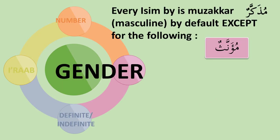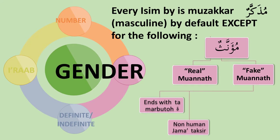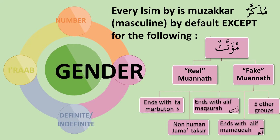The first property is gender. Every isim by default is masculine or muzakkar, except for isim which represent real females such as ummun (mother) or ukhtun (sister). This group I call real mu'annas or real feminine isim. There are also nine other groups considered feminine for various reasons — these I call fake feminine. The most important group of fake feminines are words ending with tamarbutah, making them most likely a feminine isim, or isim mu'annas in Arabic.